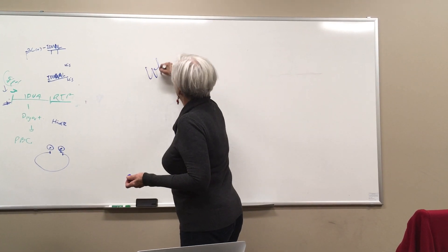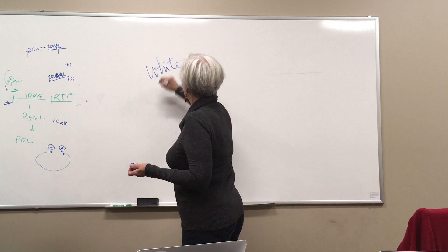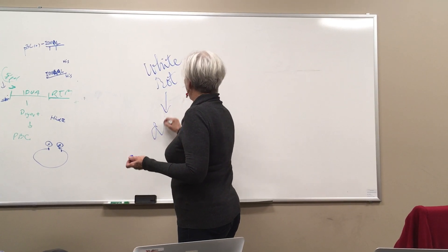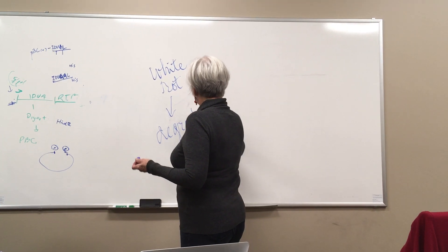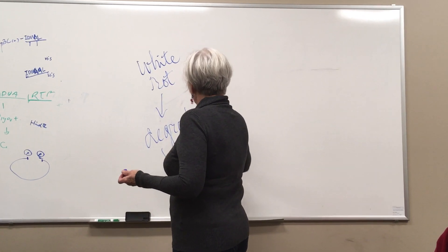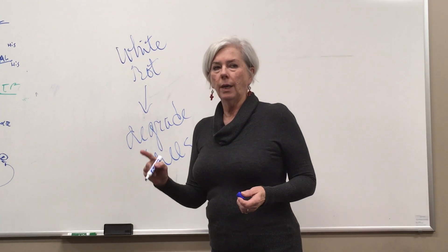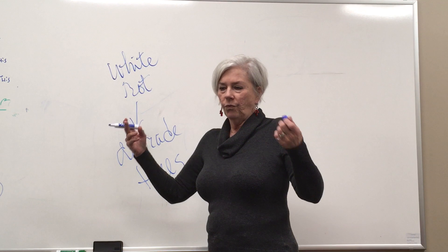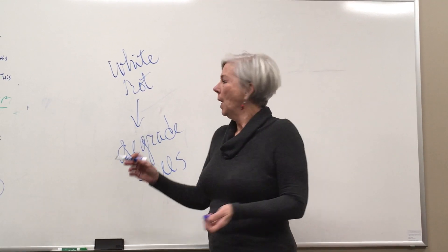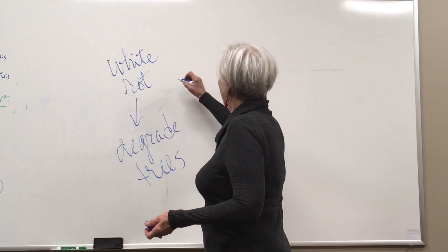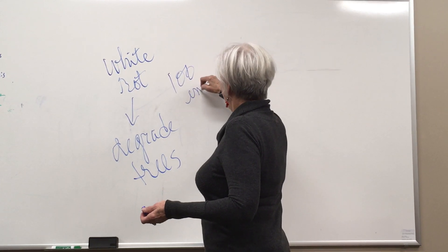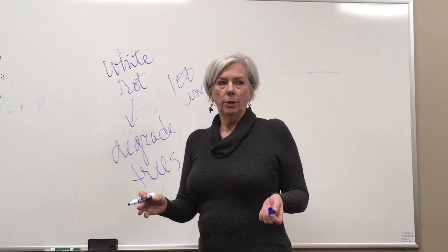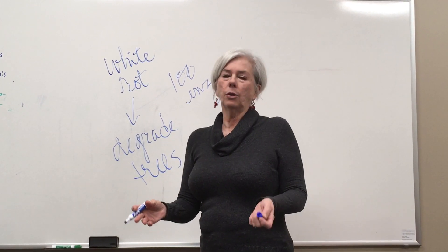Its role in life is to degrade trees in the forest so that it can use the sugars in the tree to produce more of its fungal mass. It has a hundred enzymes that it uses to degrade the tree — the lignin and then the cellulose.